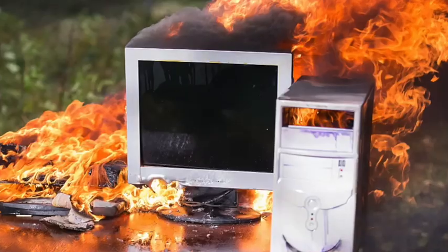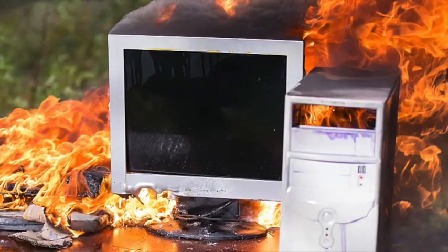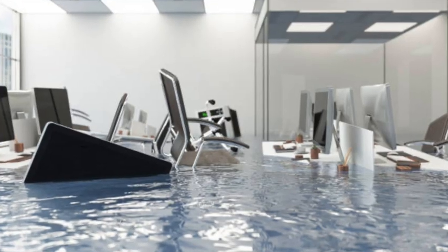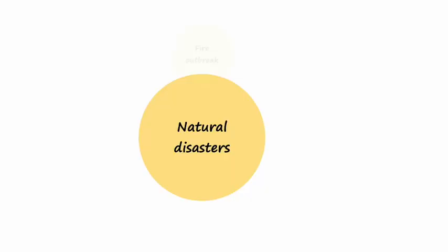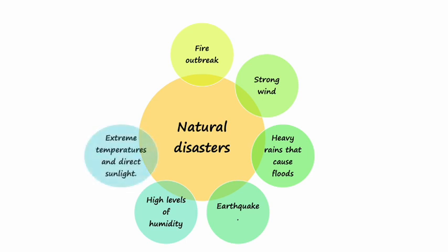Natural disasters can pose a physical threat to computers. Examples of natural disasters include: fire outbreak, strong wind, heavy rains that cause floods, earthquake, high levels of humidity, extreme temperatures and direct sunlight, and lightning and thunderstorms.